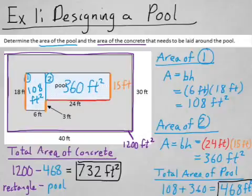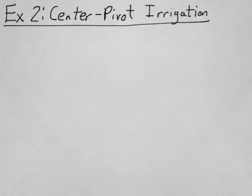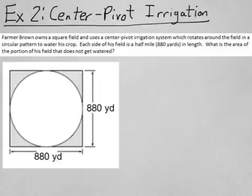Let's look at a second example. This second example we're going to look at is a farming application called center pivot irrigation. Let's say that Farmer Brown owns a square field and uses a center pivot irrigation system, which rotates around the field in a circular pattern to water his crop. Each side of his field is a half mile or 880 yards in length. What is the area of the portion of his field that does not get watered?